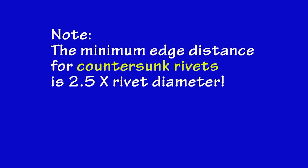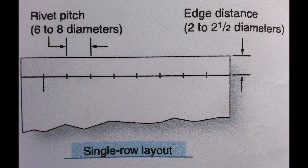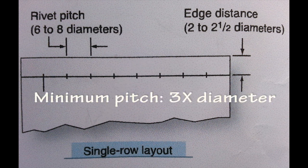The minimum edge distance for countersunk rivets is two and a half times the diameter of the rivet. Rivet pitch is the distance between the centers of neighboring rivets in the same row. The smallest allowable rivet pitch is three rivet diameters. If the rivet spacing is made at least one-sixteenth of an inch larger than this minimum, the rivet hole can be oversized without violating the minimum rivet spacing.